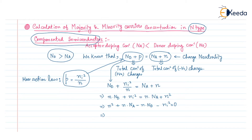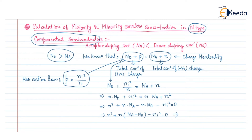After simplification, we can write this as n squared plus n(Na minus Nd) minus ni squared equals zero. We can see that this is a second-order equation of n, that is, it is a quadratic equation of n.